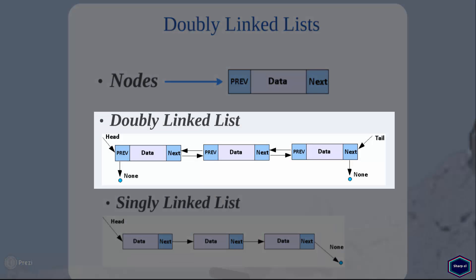Here you can see the conceptual picture of a doubly linked list with three nodes. The very first node in a doubly linked list is also called the head, and the last node the tail. The previous attribute of the head node always points to None, because the head node has no previous element, just as the tail has no next element, so its next attribute always points to None.